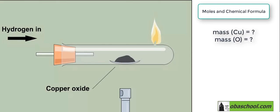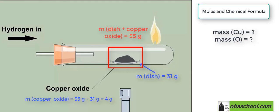Before we start the experiment, we took two measurements. Mass of the dish is 31 grams and mass of the copper oxide and the dish together before the experiment is 35 grams, which means that the mass of copper oxide is 35 minus 31 equals 4 grams.